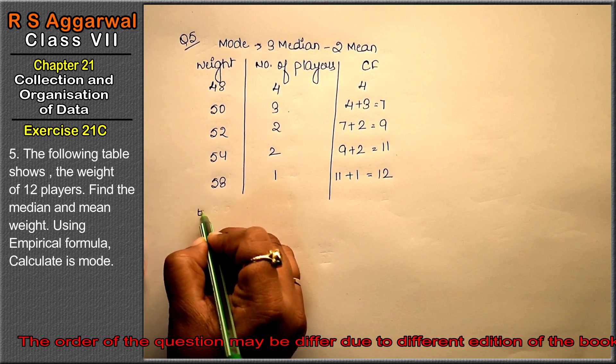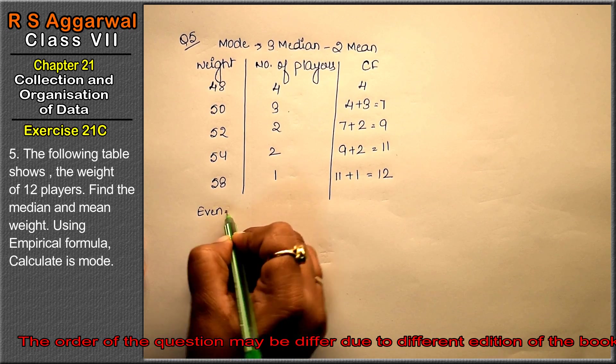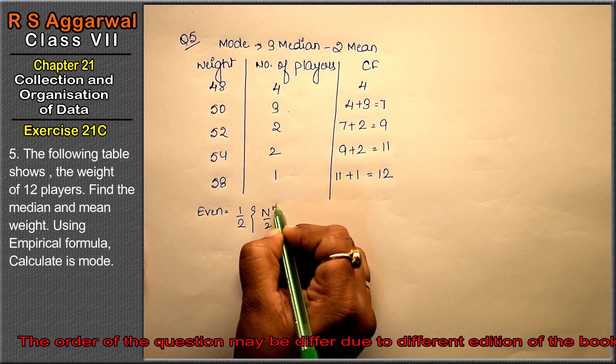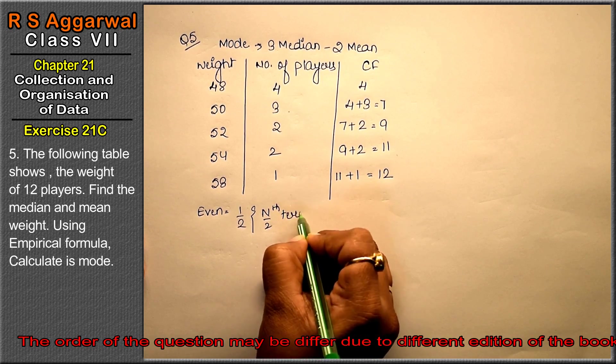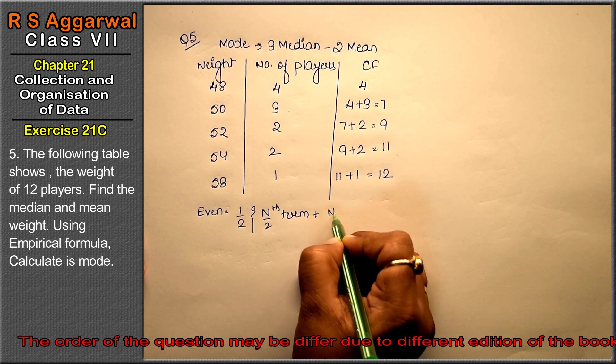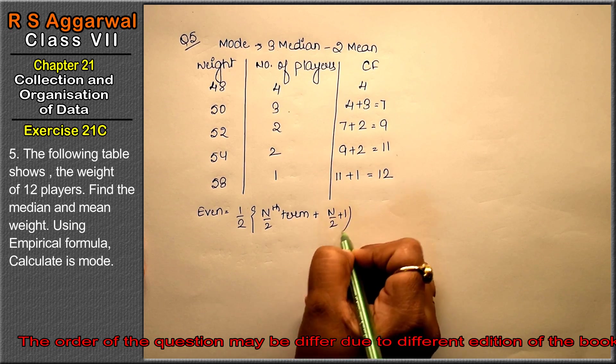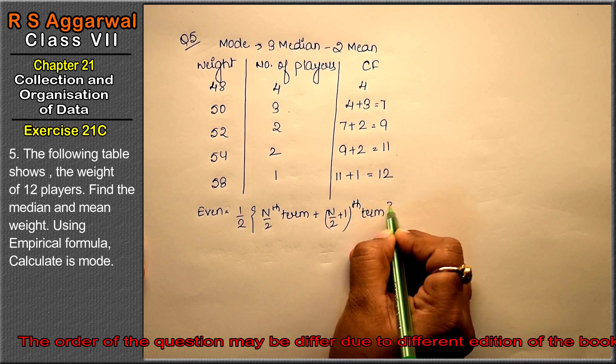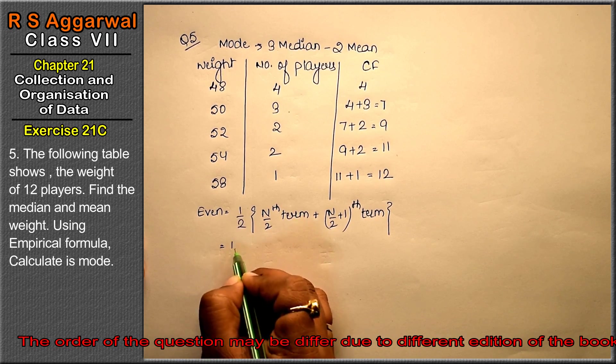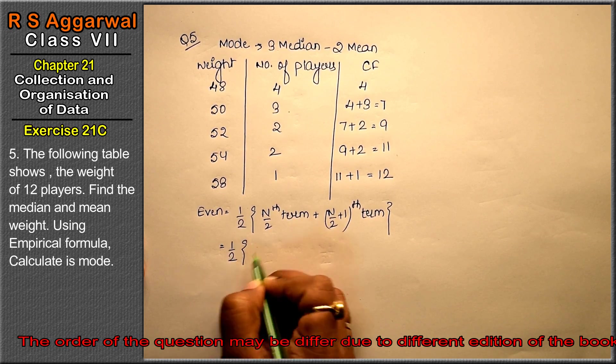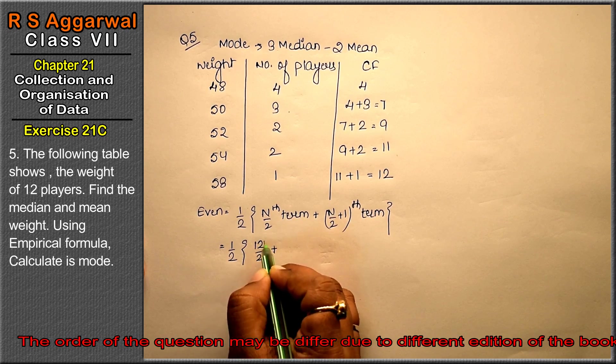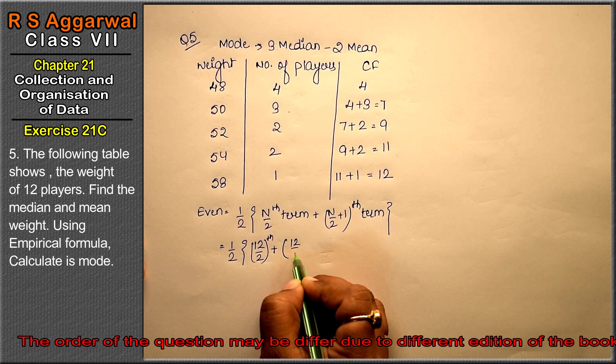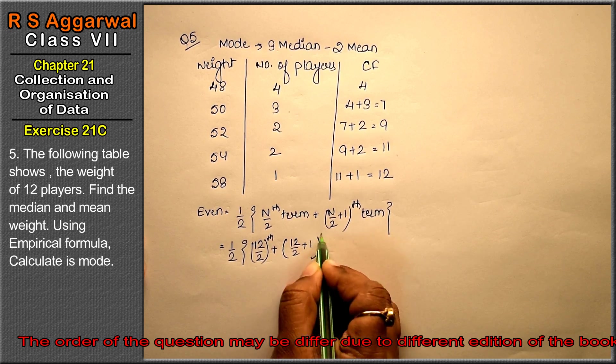Now, n is 12, so it's even. In the even case, median equals half into n/2 th term plus (n/2 + 1)th term. Here it's half into 12/2 th term plus 12/2 plus 1 th term.